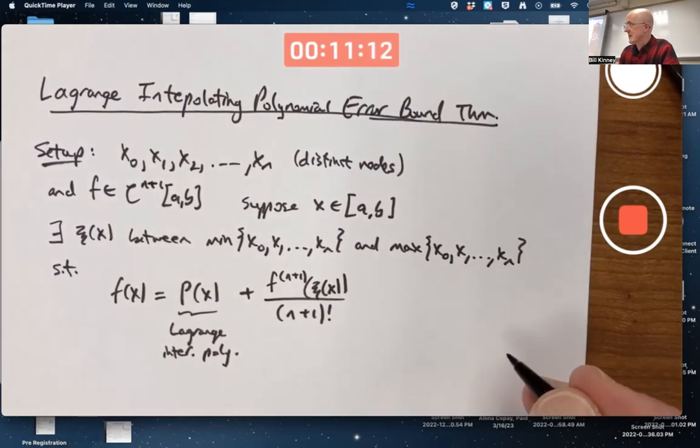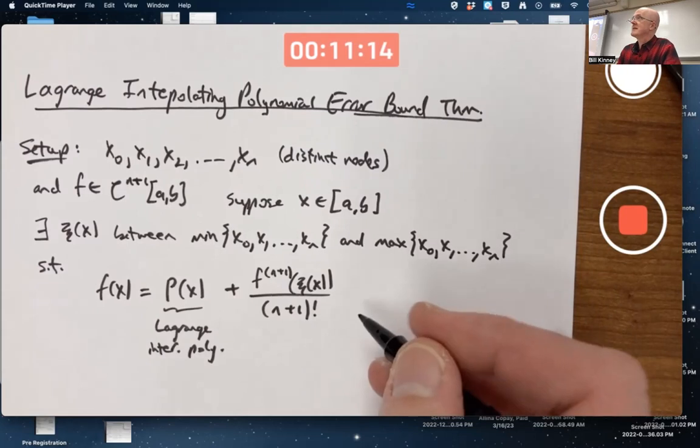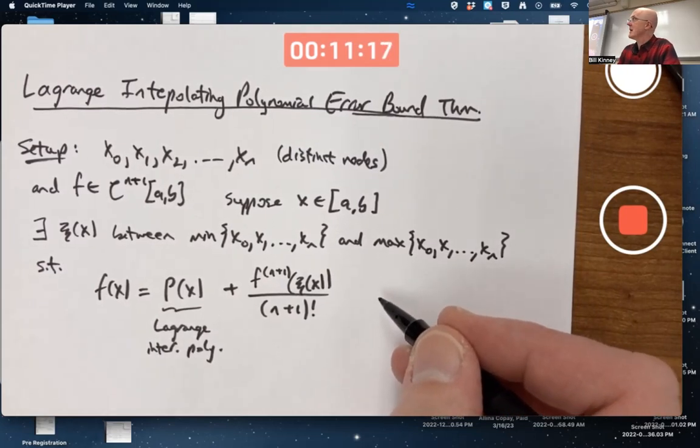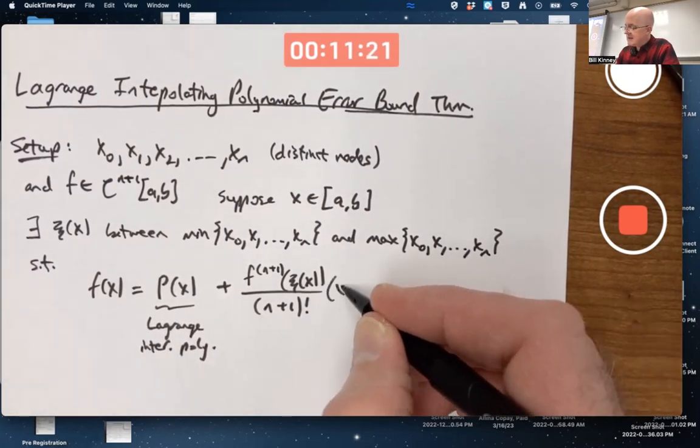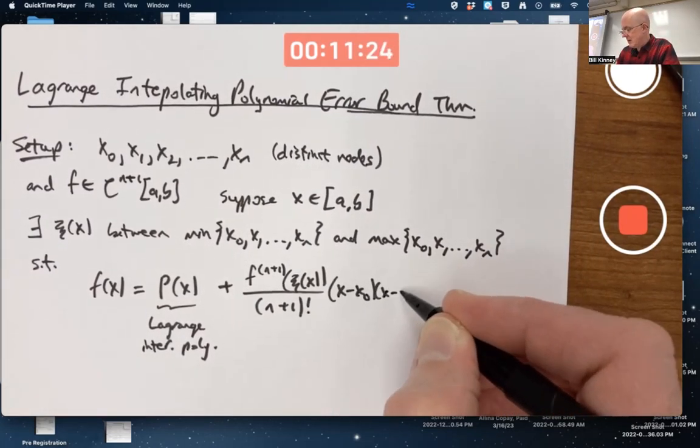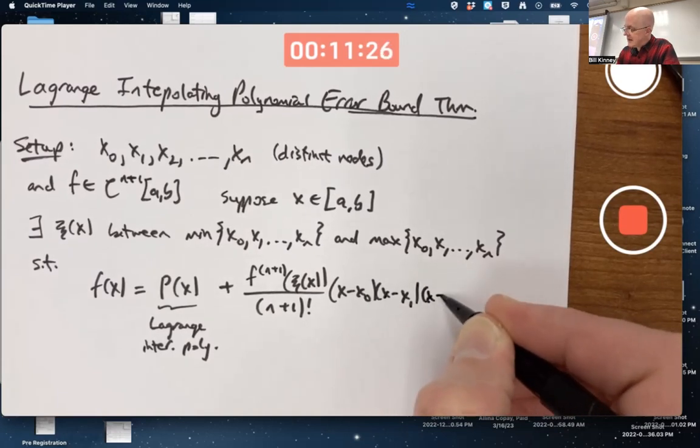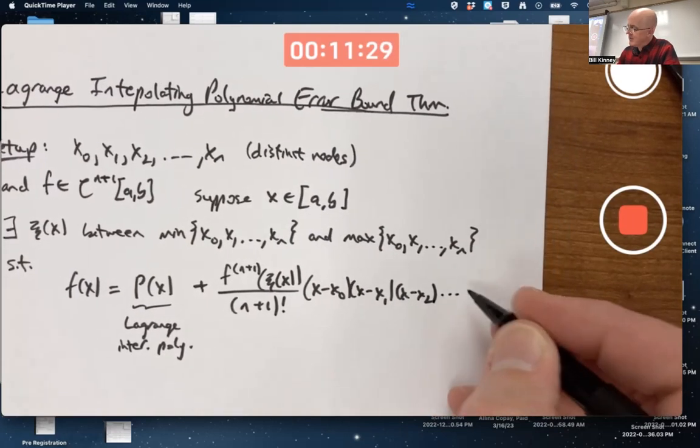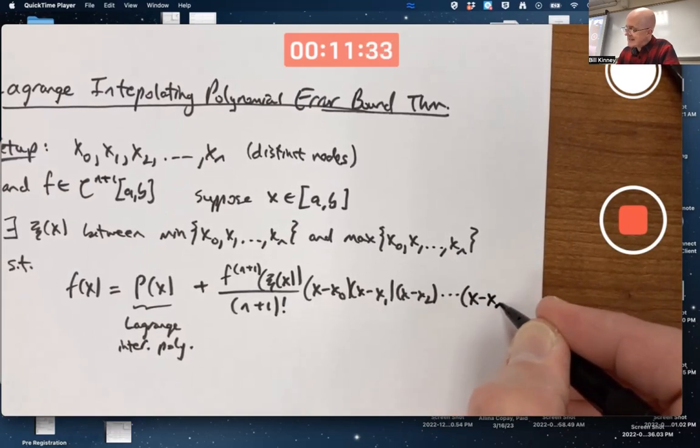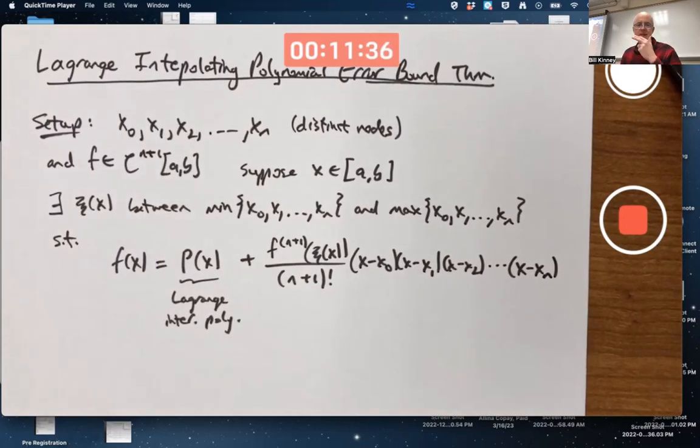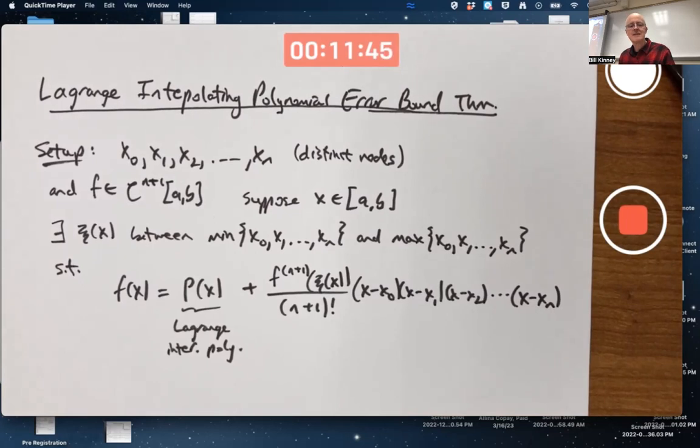Let's go ahead and write down the formula for R(x) right away. It's the n plus first derivative of f evaluated at this unknown quantity, ξ(x), divided by (n+1) factorial times (x-x0)(x-x1)(x-x2)...(x-xn). There are going to be n plus 1 factors. So this is the setup, basically this is the theorem in this kind of context.